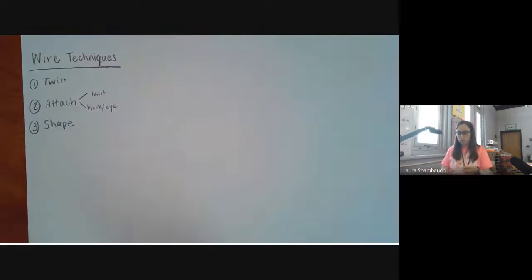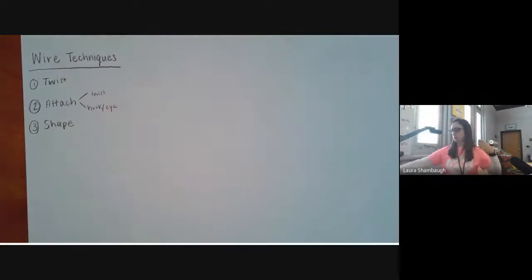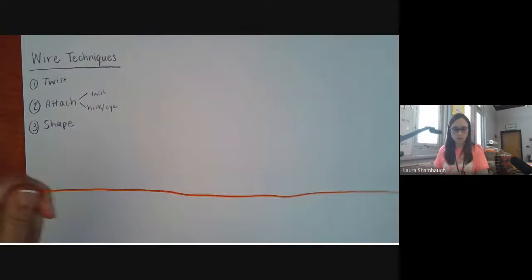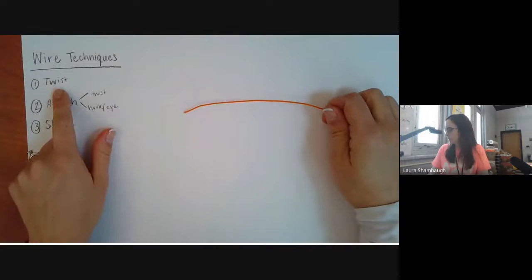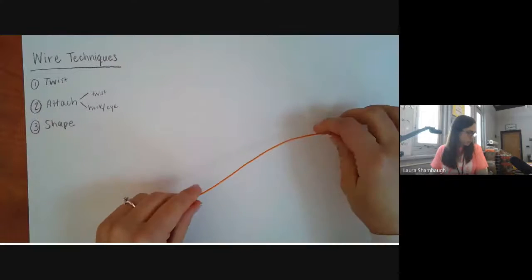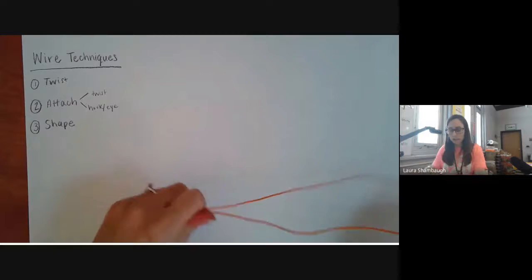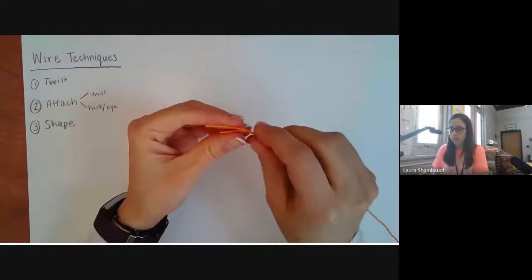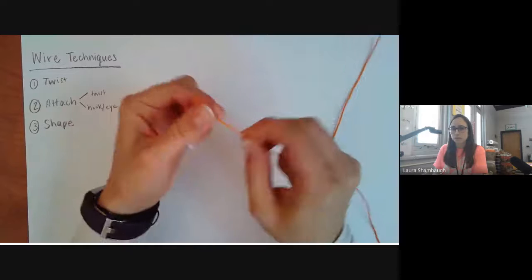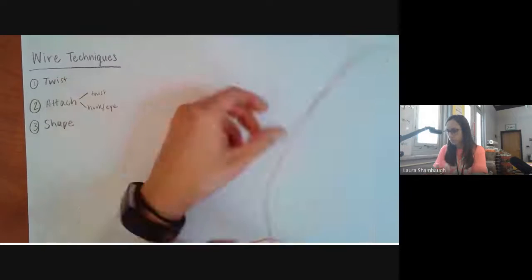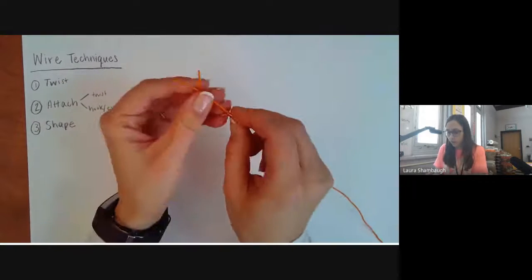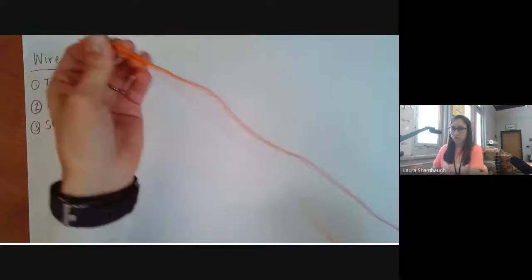The first step after you get your wire opened up is to start with one piece. We're just going to practice. The first technique we're going to do is a twist technique. This works great with one piece of wire, two pieces, or even three or four pieces. By itself one piece of wire is not very strong or stable, but when you double up the wire it can get even more strong.